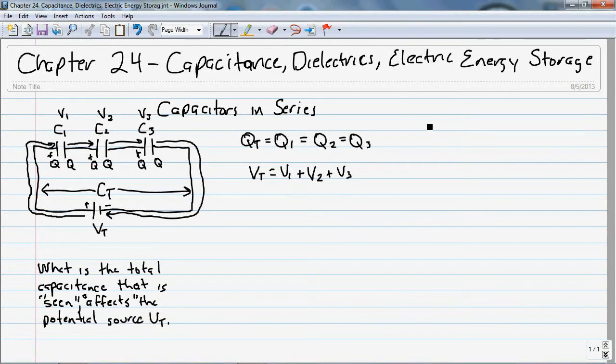So, let's start with some relationships that we should know. We have Q1 is equal to C1 V1, Q2 equals C2 V2, Q3 is equal to C3 V3.